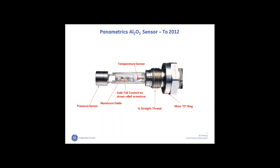This is what the sensor looks like. It has a threaded fitting — a three-quarter straight thread with an O-ring seal — that enables us to install it at pretty high pressure, up to 5,000 psig. There's also the aluminum substrate, and that black you see there is the aluminum oxide overcoated with gold. The gold is so thin that it appears black, and then there's a gold armature on top of that. This was our design up until about 2012. After 2012 we changed the design, but many people might open their probes in the field and see this sensor inside.